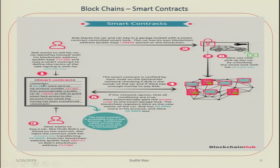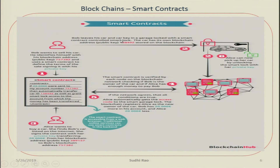The contract says something like: if 20,000 Euros are sent to my account number, then I automatically transfer the car ID as well as grant smart lock access to the account from which the money was transferred. Bob has put his car in a garage with a smart lock. Once the correct number is sent, the lock will open — that is the key Bob currently holds; he will send it to whoever pays him the 20,000. Bob leaves his car and the key in the garage locked with a smart-contract-controlled smart lock. The car has its own blockchain address and public key stored in the blockchain, and the smart contract entry, including the key number, gets entered into the blockchain.